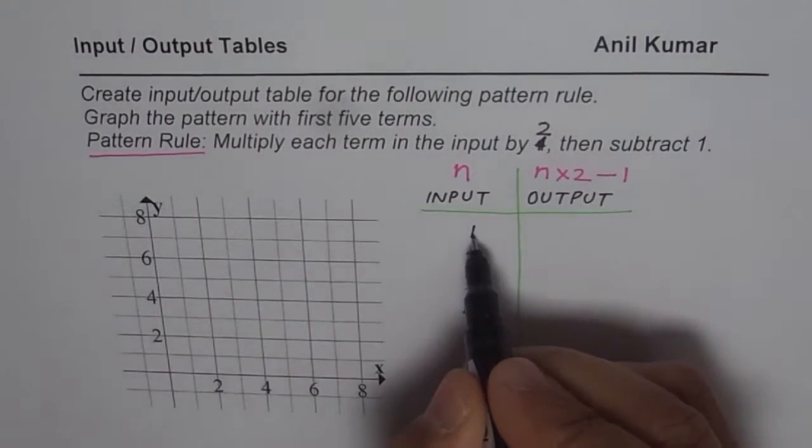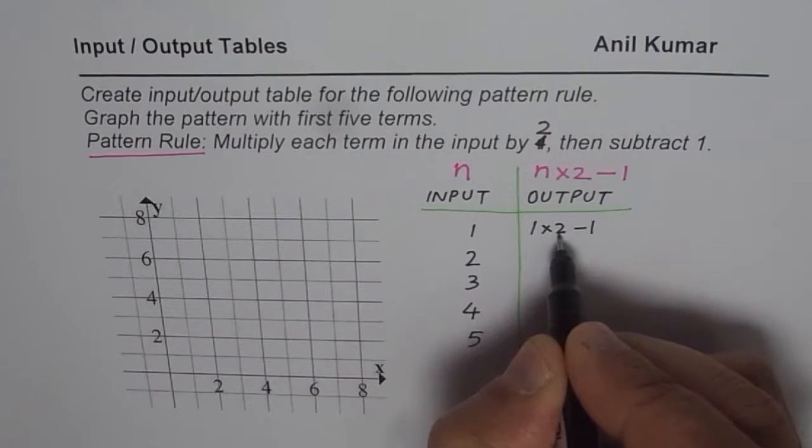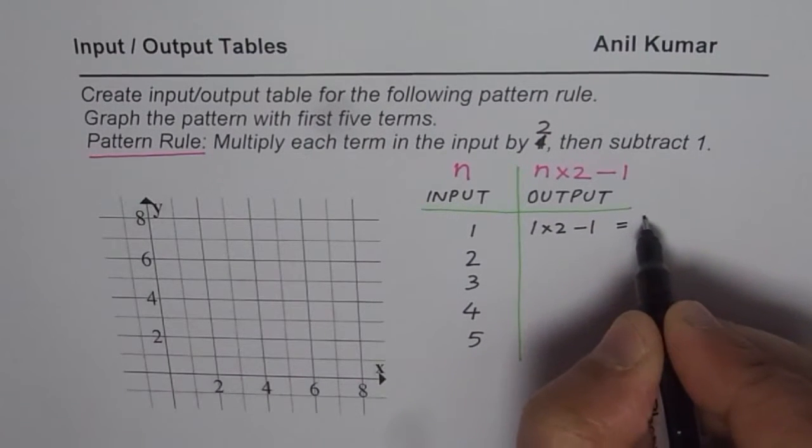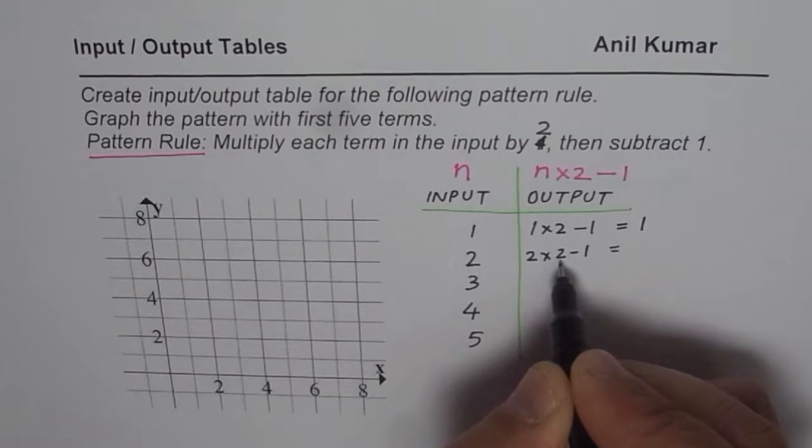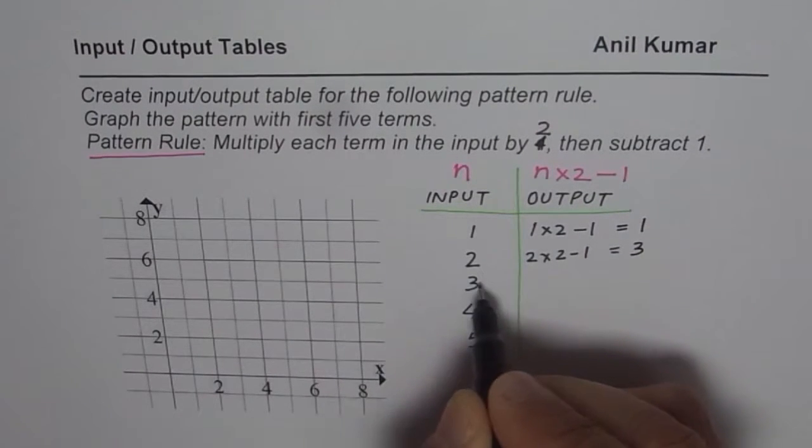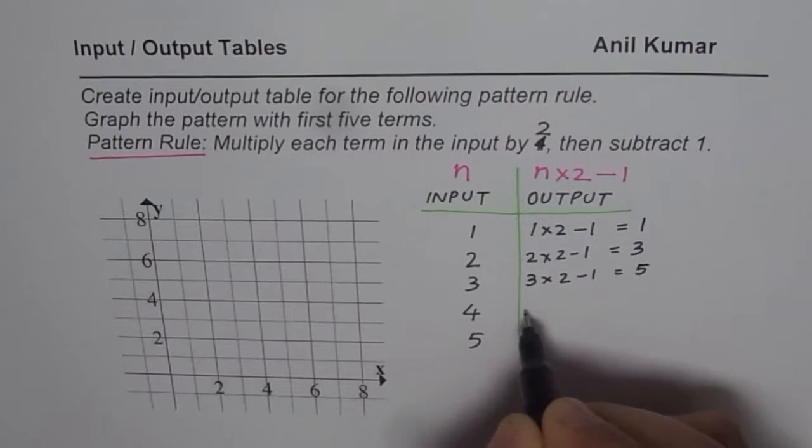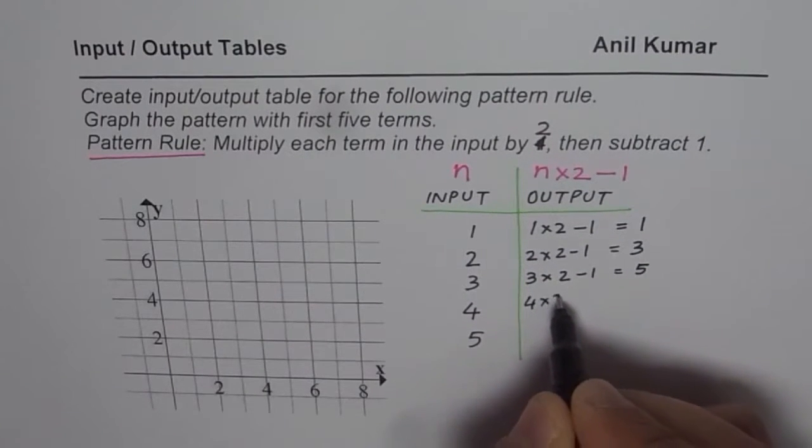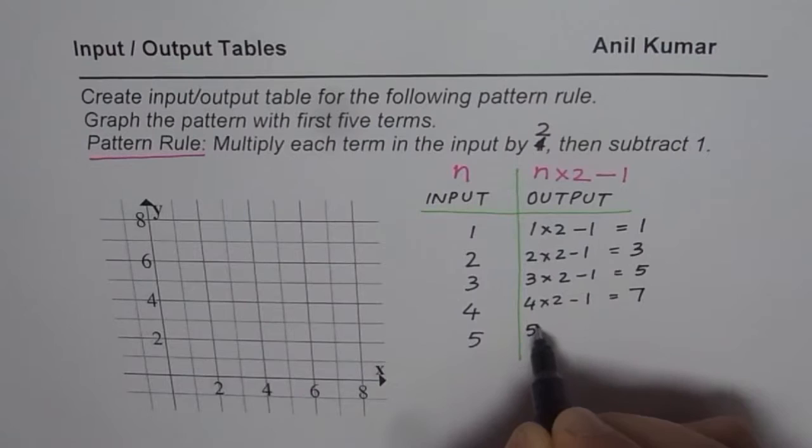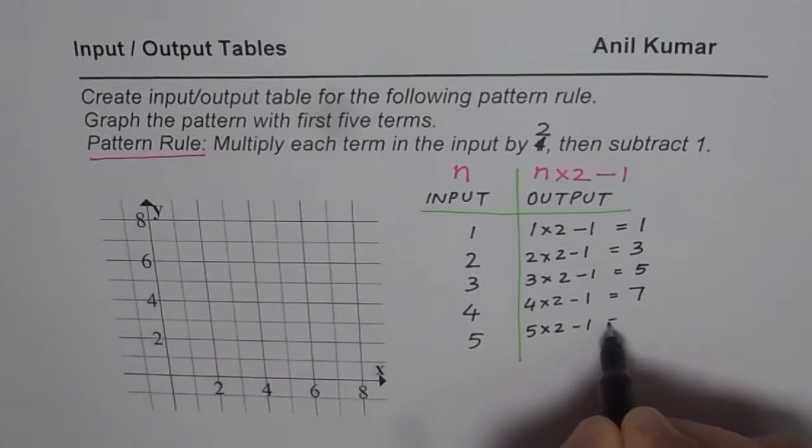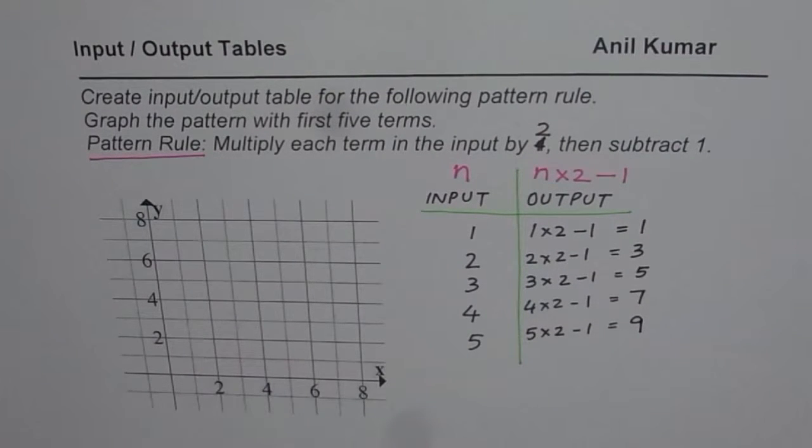So if I multiply 1 by 2, 1 times 2 minus 1, that's 2 minus 1, we get 1 here. Now 2 times 2 minus 1, that's 4 minus 1 is 3. 3 is the input, then 3 times 2 minus 1, 6 minus 1 is 5. 4 is the input, 4 times 2 minus 1, that's 8 minus 1 is 7. 5 is the input, 5 times 2 minus 1, that's 10 minus 1 is 9. So these are our outputs.